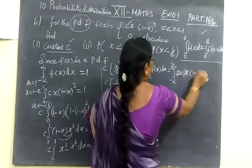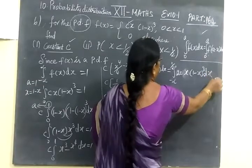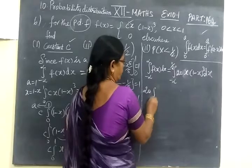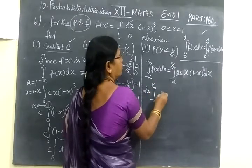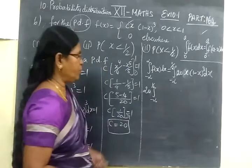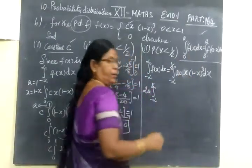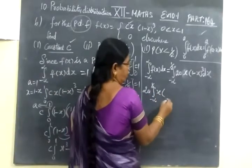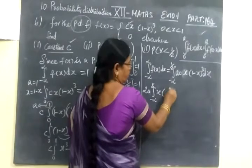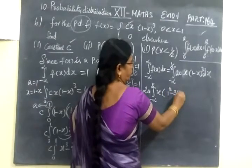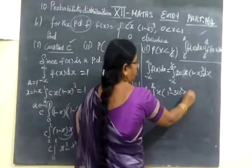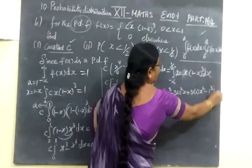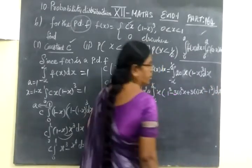C bracket, 1 minus x, x bracket 1 minus x, whole cube, dx. So now take 20 outside. So integral minus infinity to half.